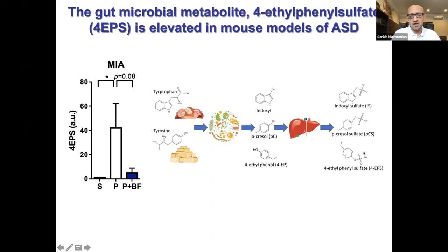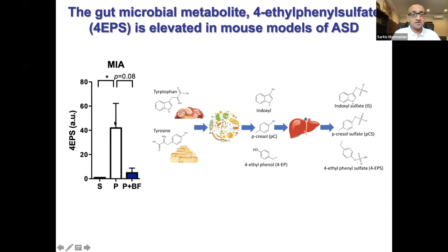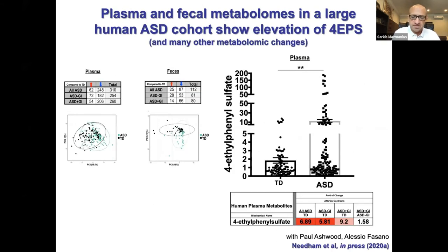This molecule, identified back in 2013, is called 4-ethylphenyl sulfate. It's a small molecule produced from tyrosine through enzymatic reactions carried out only by gut bacteria — we and mice don't appear to have the enzymes to convert tyrosine into 4-ethylphenol, which is then sulfated in the liver to 4-ethylphenyl sulfate. We see an over 40% increase in 4-ethylphenyl sulfate in poly-IC offspring compared to saline controls, which is then reduced by Bacteroides fragilis treatment.